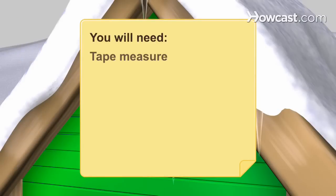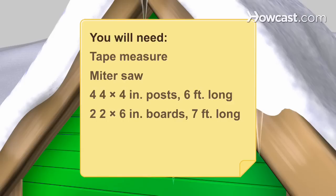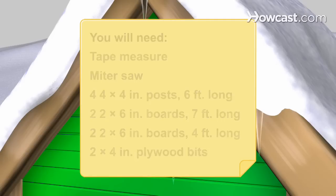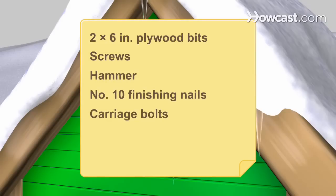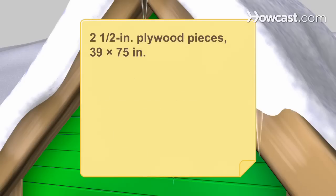You will need a tape measure, a miter saw, 4 4x4 posts 6 feet long, 2 2x6 boards about 7 feet long, 2 2x6 boards about 4 feet long, 2 x 4 inch plywood bits, 2 x 6 inch plywood bits, screws, hammer, No. 10 finishing nails, carriage bolts, drill, 4 bolts, 2 1⁄2-inch plywood pieces 39 x 75 inches, and sandpaper.